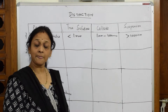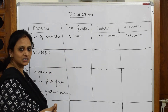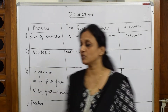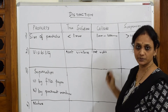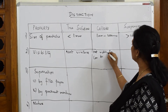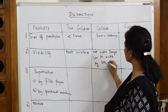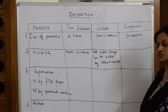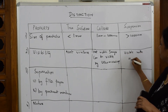Next criteria is visibility — whether you can see it with your naked eye or require a microscope. True solutions, because of their very small size, are not visible to the naked eye. Colloids are also not visible to the naked eye, but images can be visible using an ultramicroscope. Suspensions, with size greater than 1000 nanometers, are visible with the naked eye.